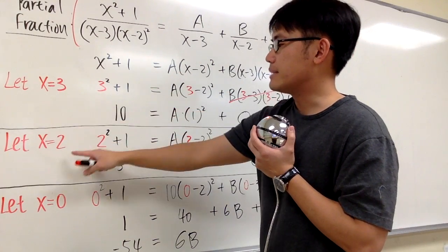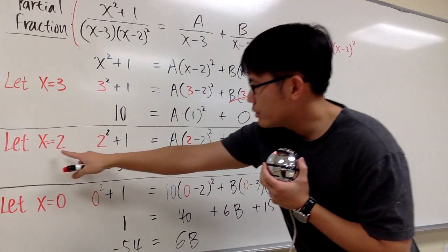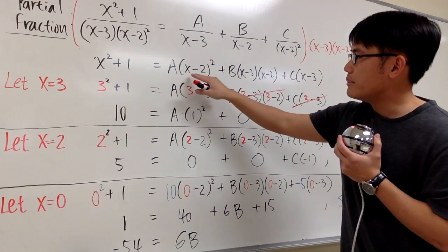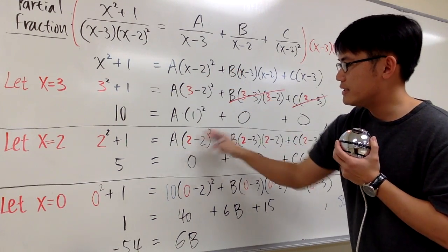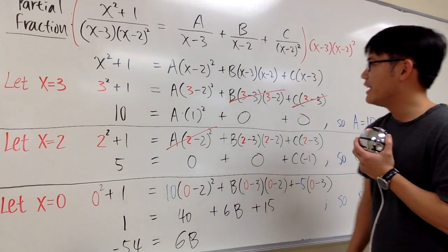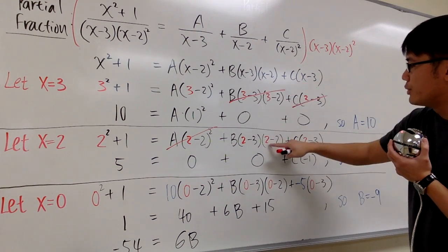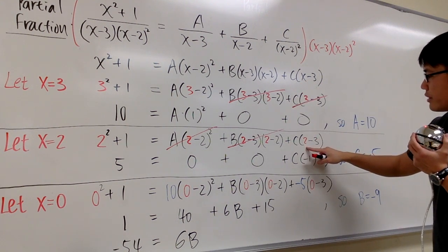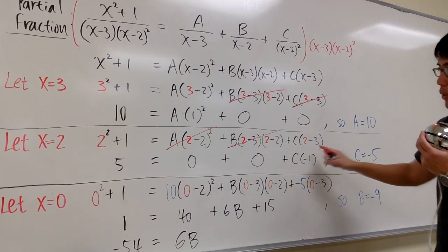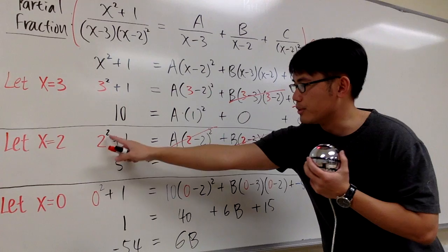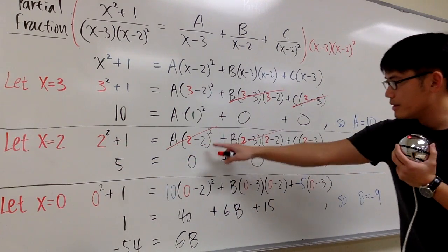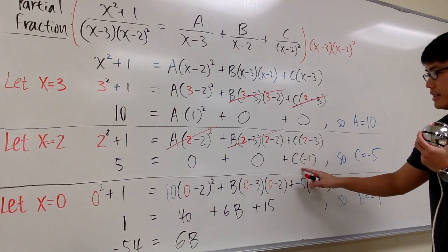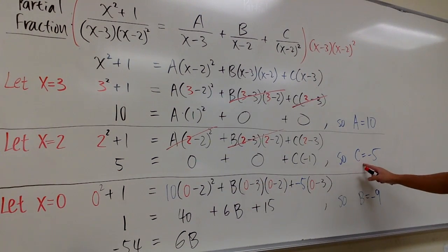Now let's pick x equal to 2. Plugging 2 into all the x, we have 2 squared plus 1. When x equals 2, the term a times x minus 2 squared becomes 0, and the b term also has x minus 2 which becomes 0. The last term doesn't have x minus 2, so we get c times 2 minus 3. So the equation becomes: 5 equals 0 plus 0 plus c times negative 1, meaning negative c equals 5, so c equals negative 5.